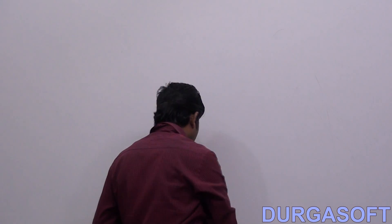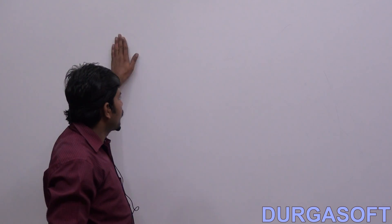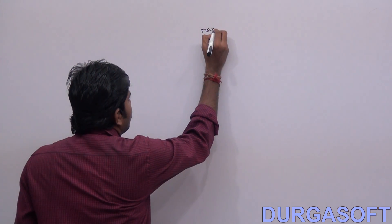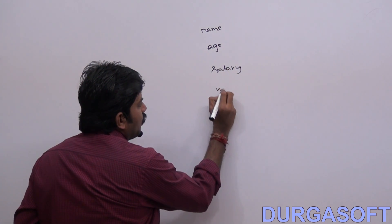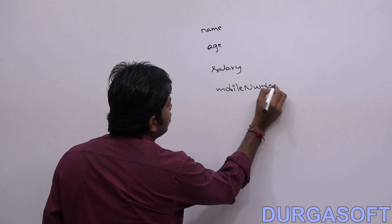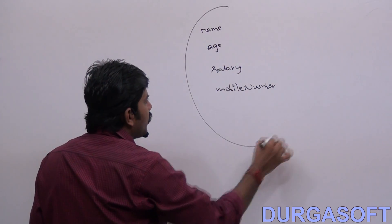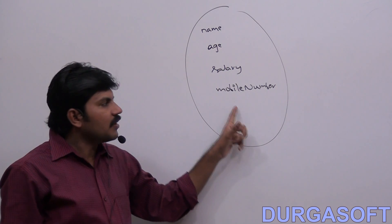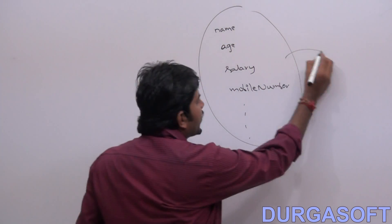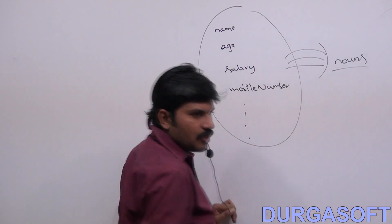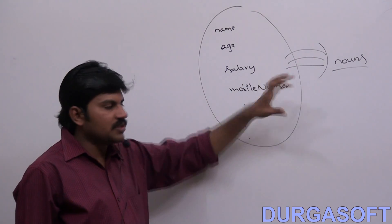Coding standards for variables. Can you spell out any variable name? Name is a variable name, Salary is a variable name, Age is a variable name, MobileNumber is a variable name. Usually in English, Name, Age, Salary, MobileNumber — these things are considered as nouns, because every variable holds some value.